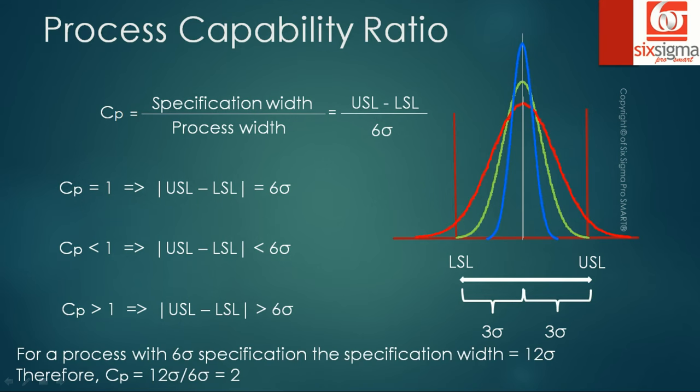It's important to understand that when we talk about a process in terms of sigma level, it is on both sides of the mean, not just the overall width. So a six sigma process has a total width of twelve sigma. Therefore the numerator in our case, USL minus LSL, becomes twelve sigma divided by six sigma which comes out to be two.